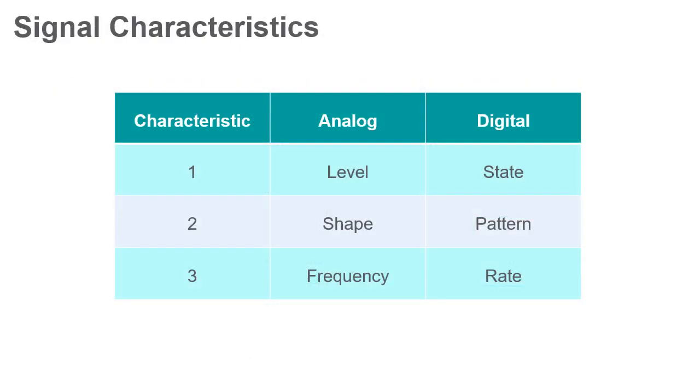Signal Characteristics. Depending on the measurement you're interested in, different characteristics of the measurement signal will be of interest. The three primary characteristics of a signal are level or state, shape or pattern, and frequency or rate.